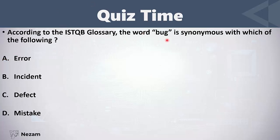According to the ISTQB glossary, the word 'bug' is synonymous with which of the following: error, incident, defect, or mistake? The correct answer is defect — the word 'bug' is synonymous with defect or fault.